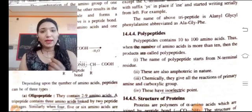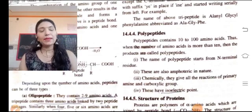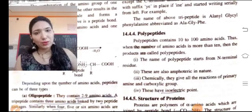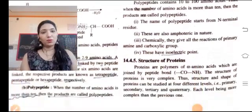Chemically they give all reactions of primary amine and carboxylic group. There are two types of functional groups, amine and carboxylic group. So they show chemical reactions related to both. These have isoelectric point, and inside them isoelectric point is also there due to zwitterion.